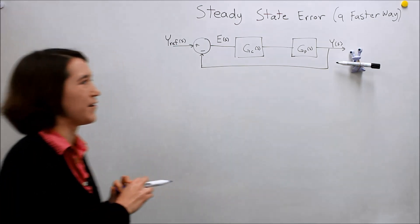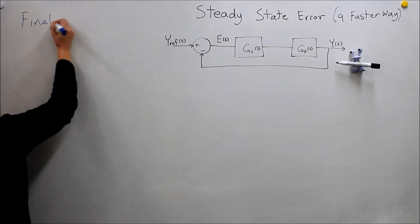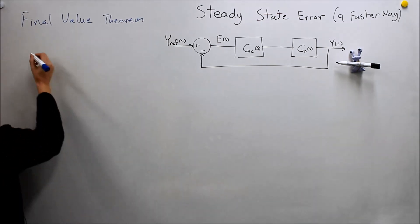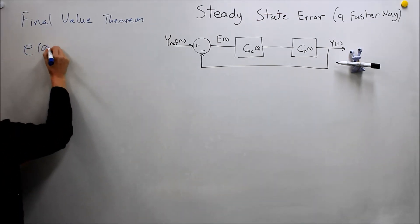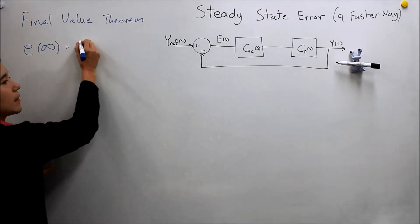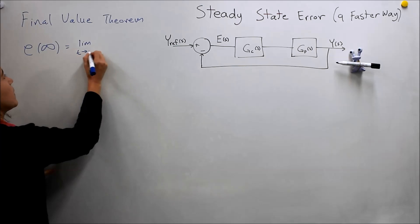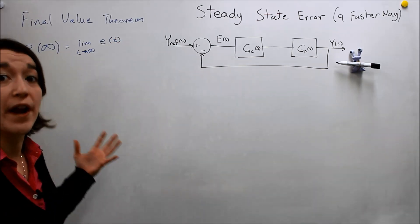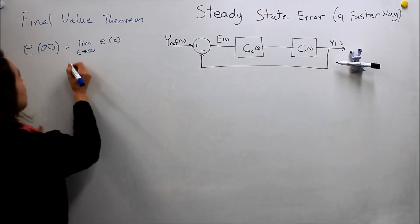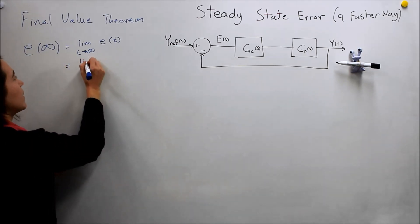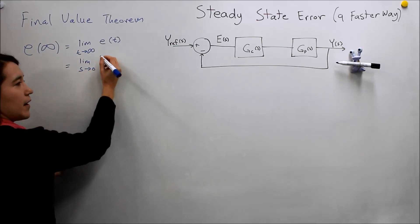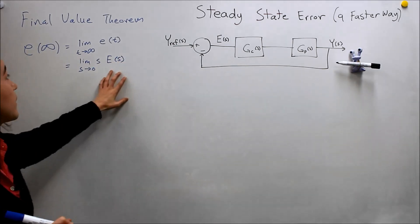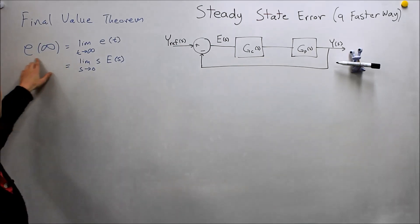Okay, let's recall first of all what the final value theorem is. Alright, if you recall, it would be we want to find the value of e as time goes to infinity which is equivalent to the limit as t goes to infinity of our function e of t. So in here, e is going to represent our error because that's what we want to find. And this is equivalent to if we change it into the Laplace domain the limit as s goes to zero of s times our Laplace transform of the error function. So we can use this to find the same steady state value.